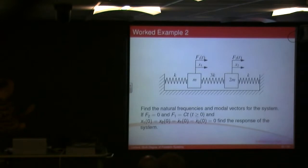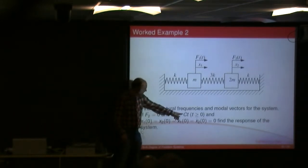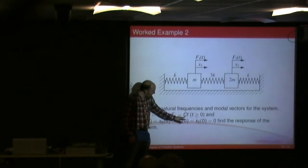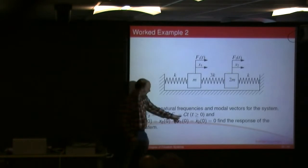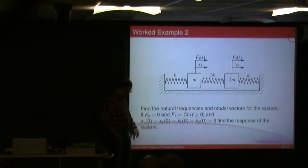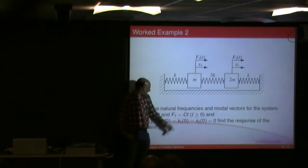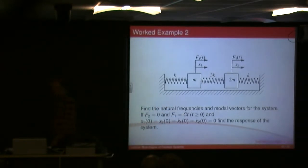And so in this case, f2 is 0. My forcing function is a linear increasing force. Some constant times by time is going to be a straight line from time 0, and obviously I've given some initial conditions. Everything is 0 at t equals 0. Find the response of the system.